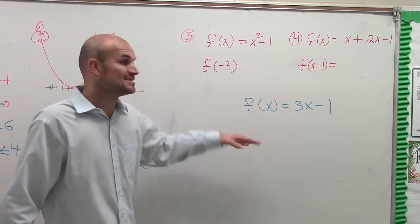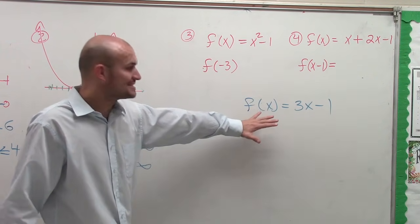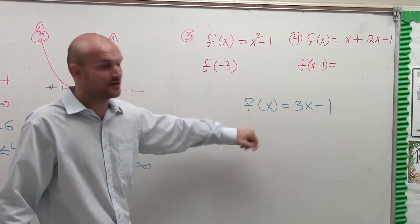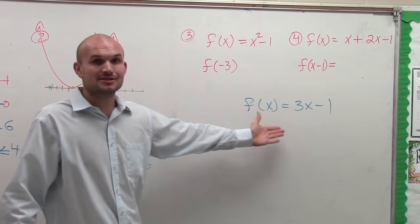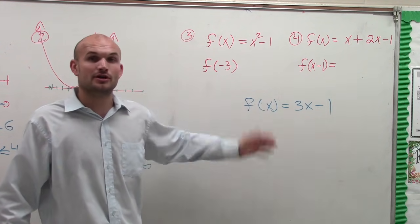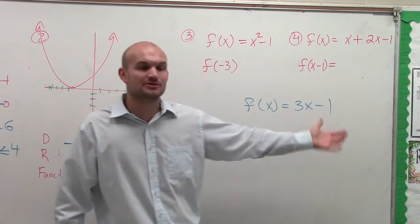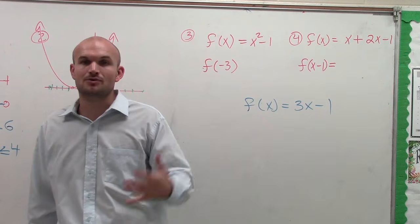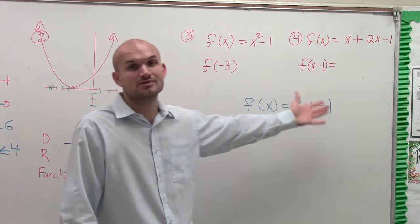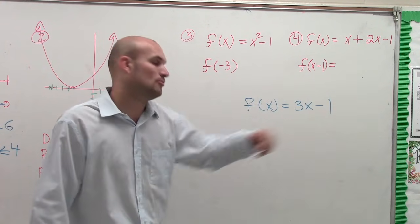Remember, f of x is going to be your name — f is the name of your function, x is going to be the value of your input that you're going to plug into your function, and f of x is going to be the value of your function at your input, or what we also call the rule, or our output.